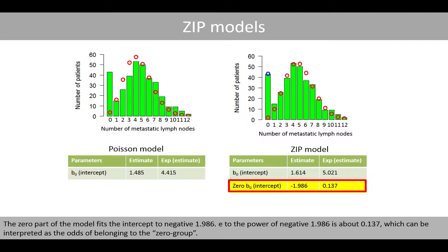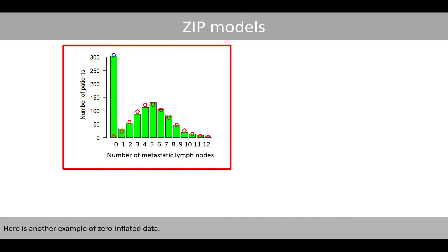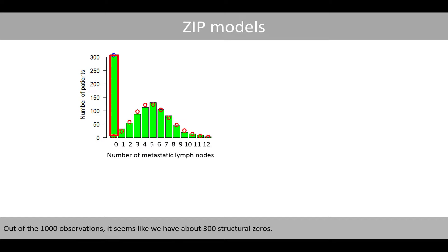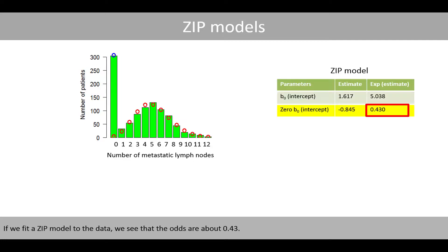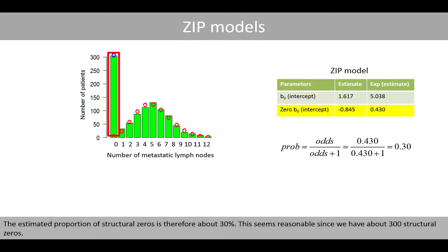The zero part of the model fits the intercept to negative 1.986. e to the power of negative 1.986 is about 0.137, which can be interpreted as the odds of belonging to the zero group. Patients classified as structural zeros represent about 12% of all 340 patients in the dataset. In another example with 1000 observations and about 300 structural zeros, fitting the zero-inflated Poisson model gives odds of about 0.43. The probability that a patient belongs to the zero group is about 30%, so the estimated proportion of structural zeros is about 30%, which seems reasonable.